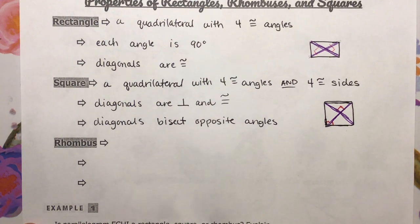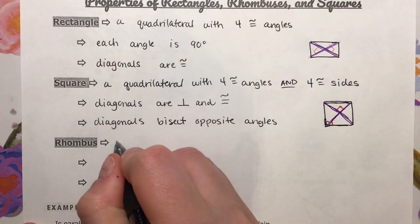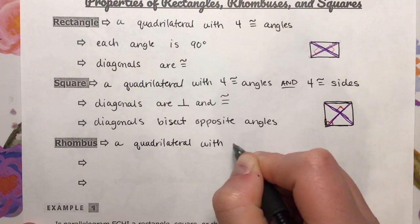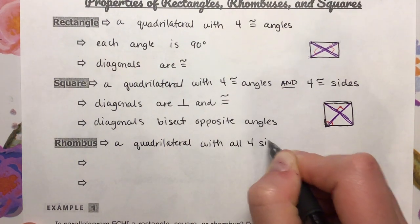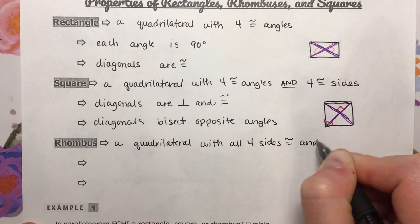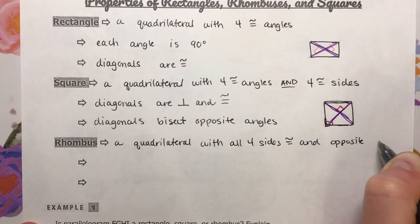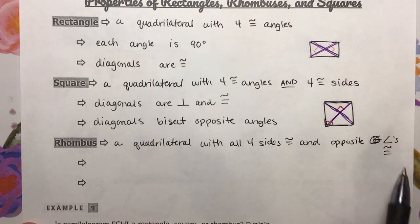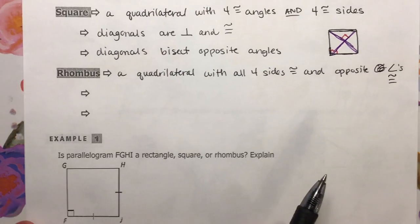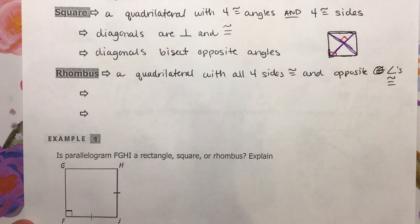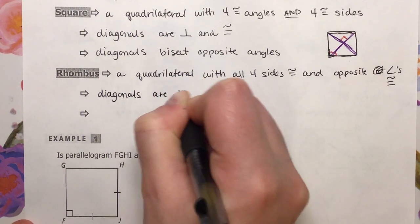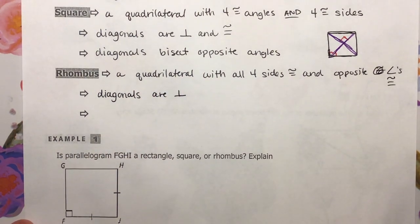Now we have a rhombus. What is a rhombus? A quadrilateral — it's still a four-sided shape — with all four sides congruent and opposite angles congruent. There are a couple of extra properties about rhombuses. Diagonals are perpendicular, and remember perpendicular means they meet at a 90 degree angle. Also, diagonals are going to bisect opposite angles in a rhombus as well.